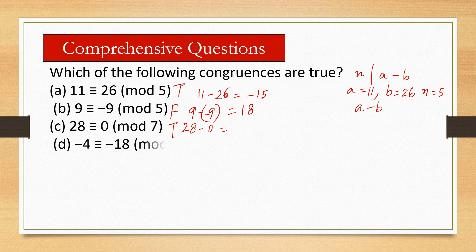Next question: (d) -4 ≡ -18 (mod 7). So negative 4 minus negative 18, so this will be plus 18, that will be 14, is divisible by 7? Yes, so it is true.